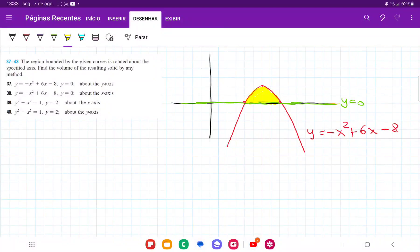For number 37, we want to take the area bounded between these two curves, and I've drawn that in yellow. It's the area bounded between the red curve and the green curve, and we want to revolve it about the y-axis.